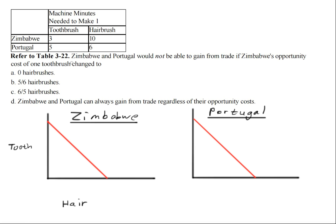Now on the y-axis, we'll have the toothbrushes, and the maximum that Zimbabwe can produce would be three. And the maximum hairbrushes it can produce would be ten. For Portugal, it would be five toothbrushes, and over here it would be six hairbrushes.